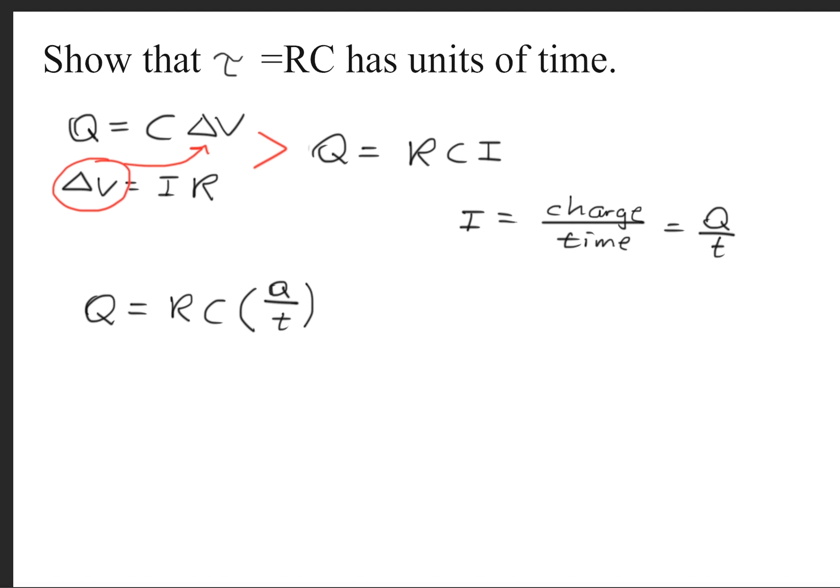Notice here that already the units of time appear, which is seconds. We'll cancel out the Q's on both sides, so that we're left with 1 equals RC times 1 over t.